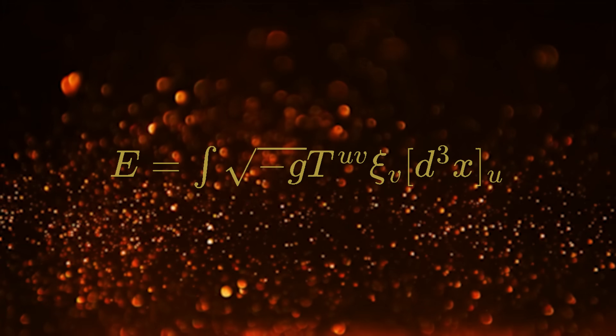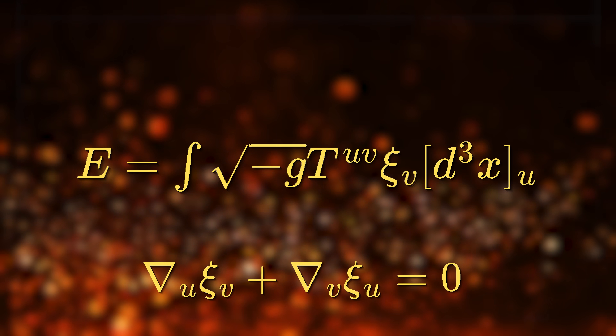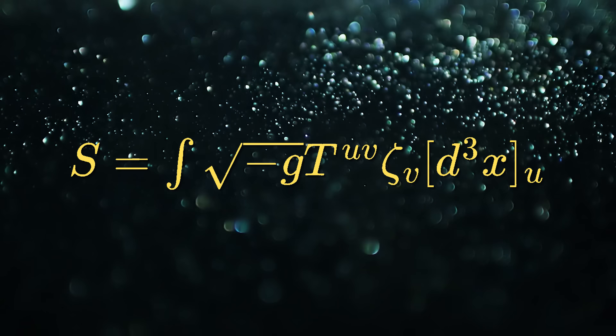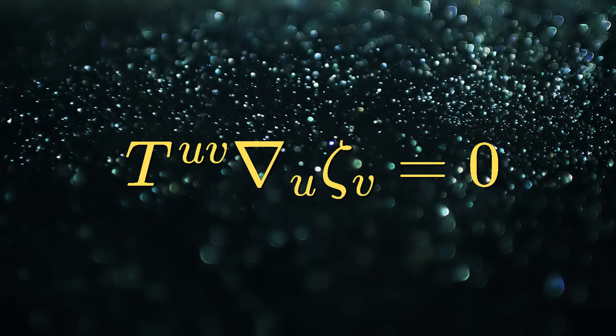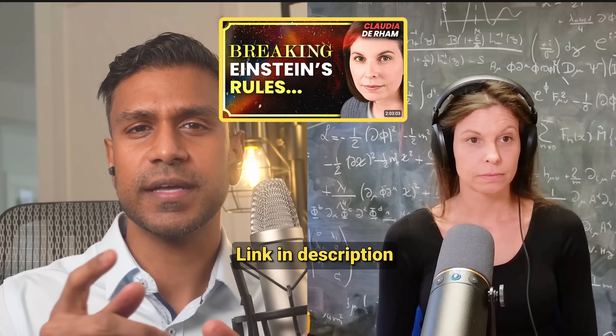If there's no Killing vector — no perfect symmetry — what do you do? It turns out there's another quantity, let's call it S, which is still conserved if a more general condition holds. That condition just needs to hold for some vector field and it doesn't need to be Killing. But can we always find such a vector field, and what does S even mean? I discuss gravity, gravitons, and gravitational energy with Professor Claudia de Rham for more detail.